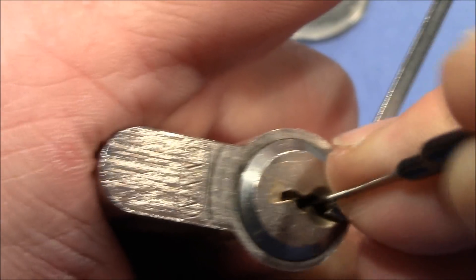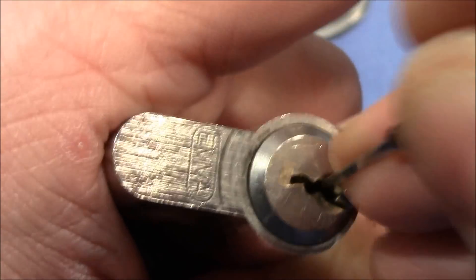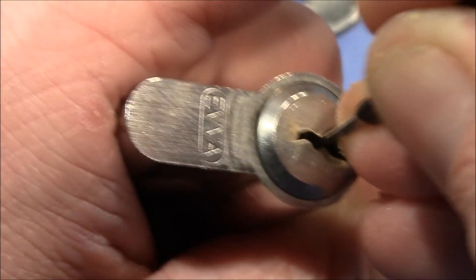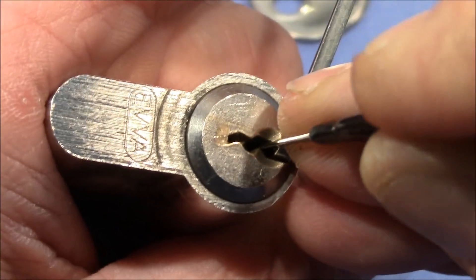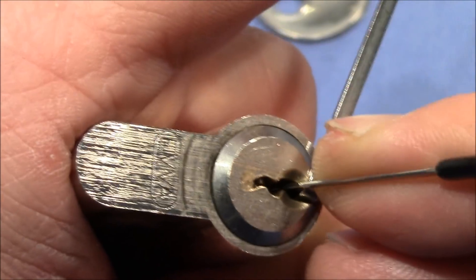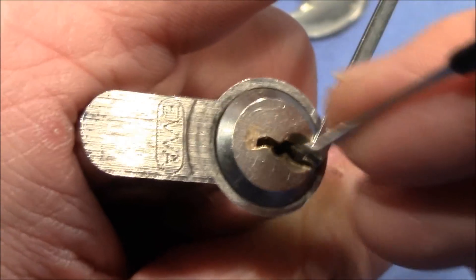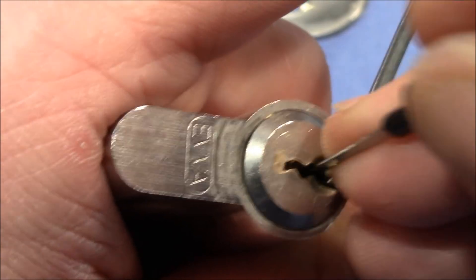Come on. Okay, at least two spools. Now three is binding. Lost the false set, one is binding, got it back, two popped up.